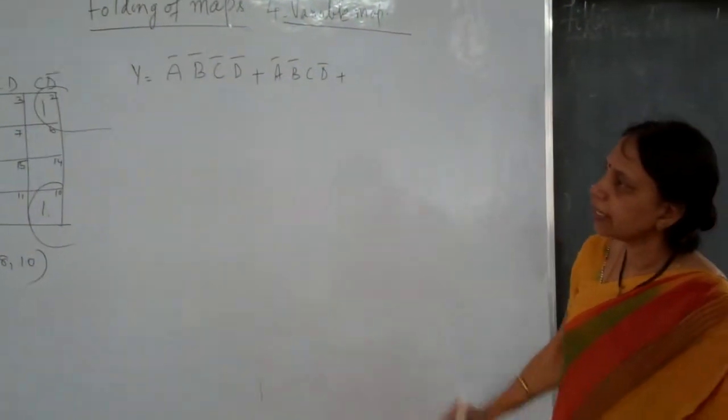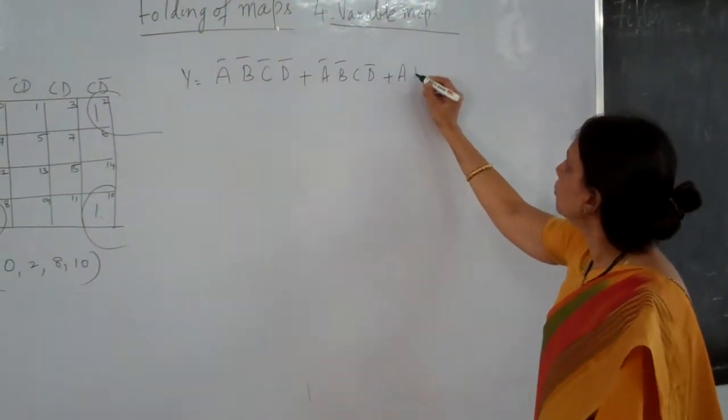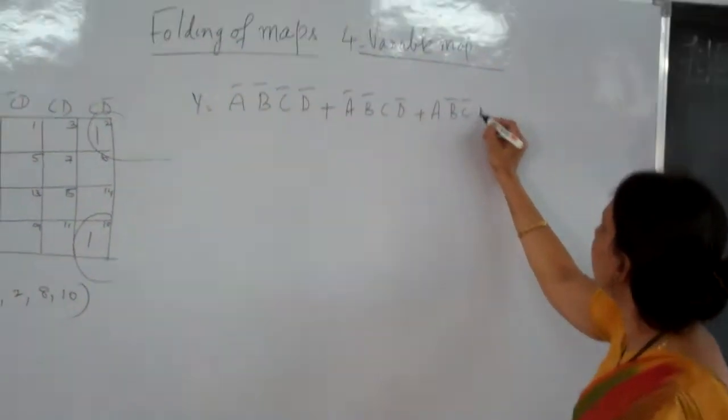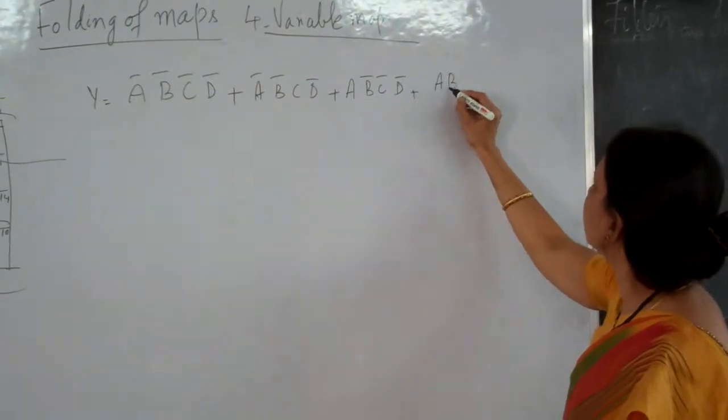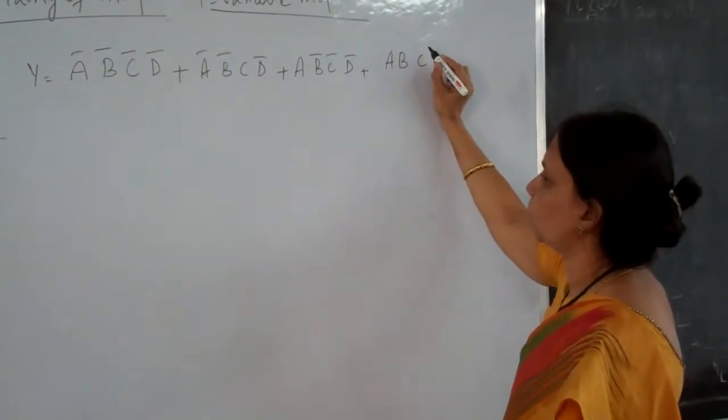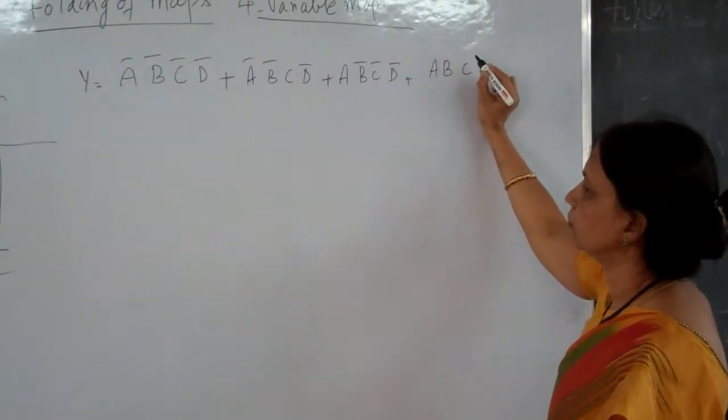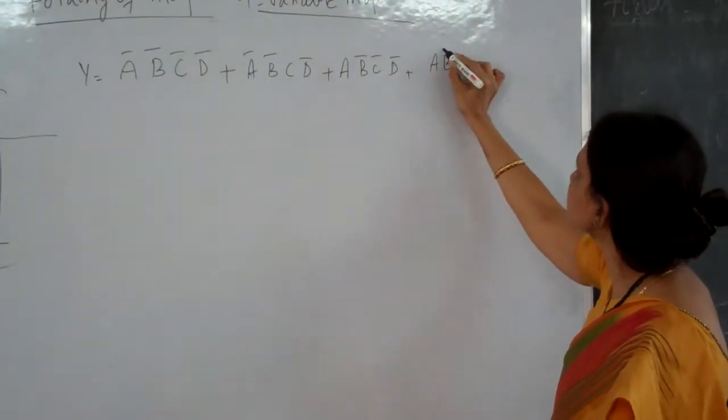What is 8? A, B bar, C bar, D bar. What is time? A, B bar, C bar, D bar.